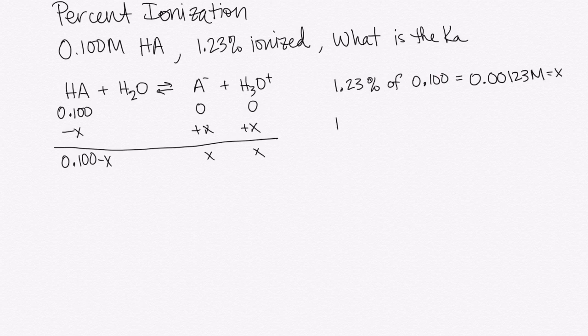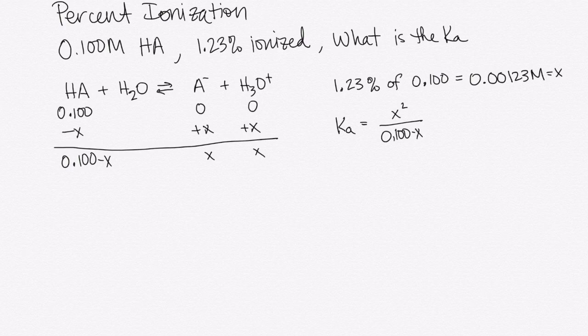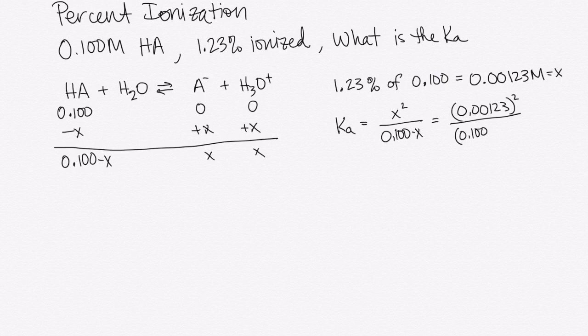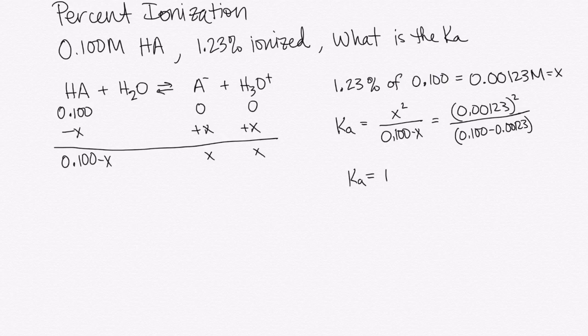So now I can plug in for my equilibrium expression. I'll have X squared over 0.1 minus X. I know my value of X is 0.00123. And I can calculate then my value of the Ka. And it's going to be 1.53 times 10 to the minus 5th.